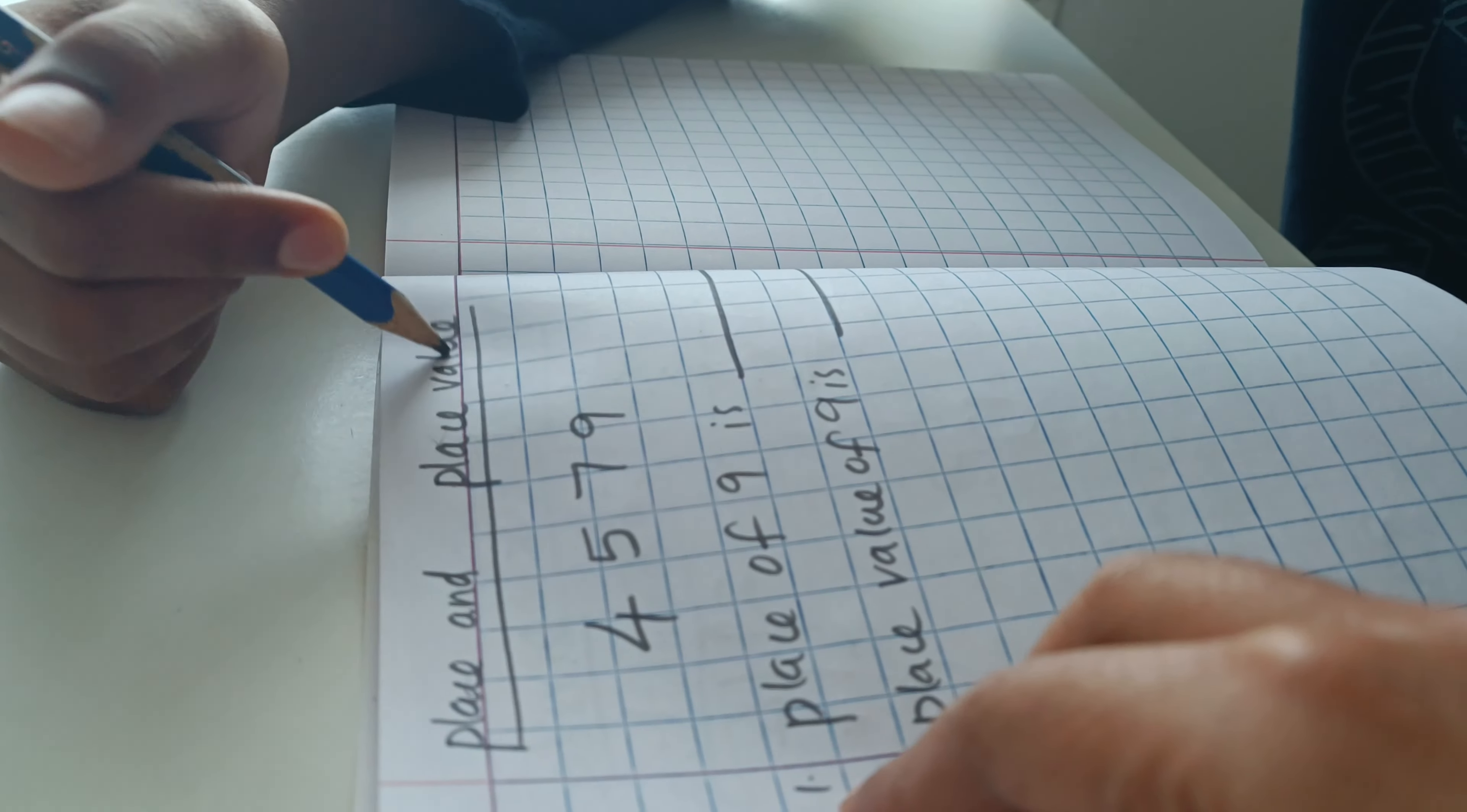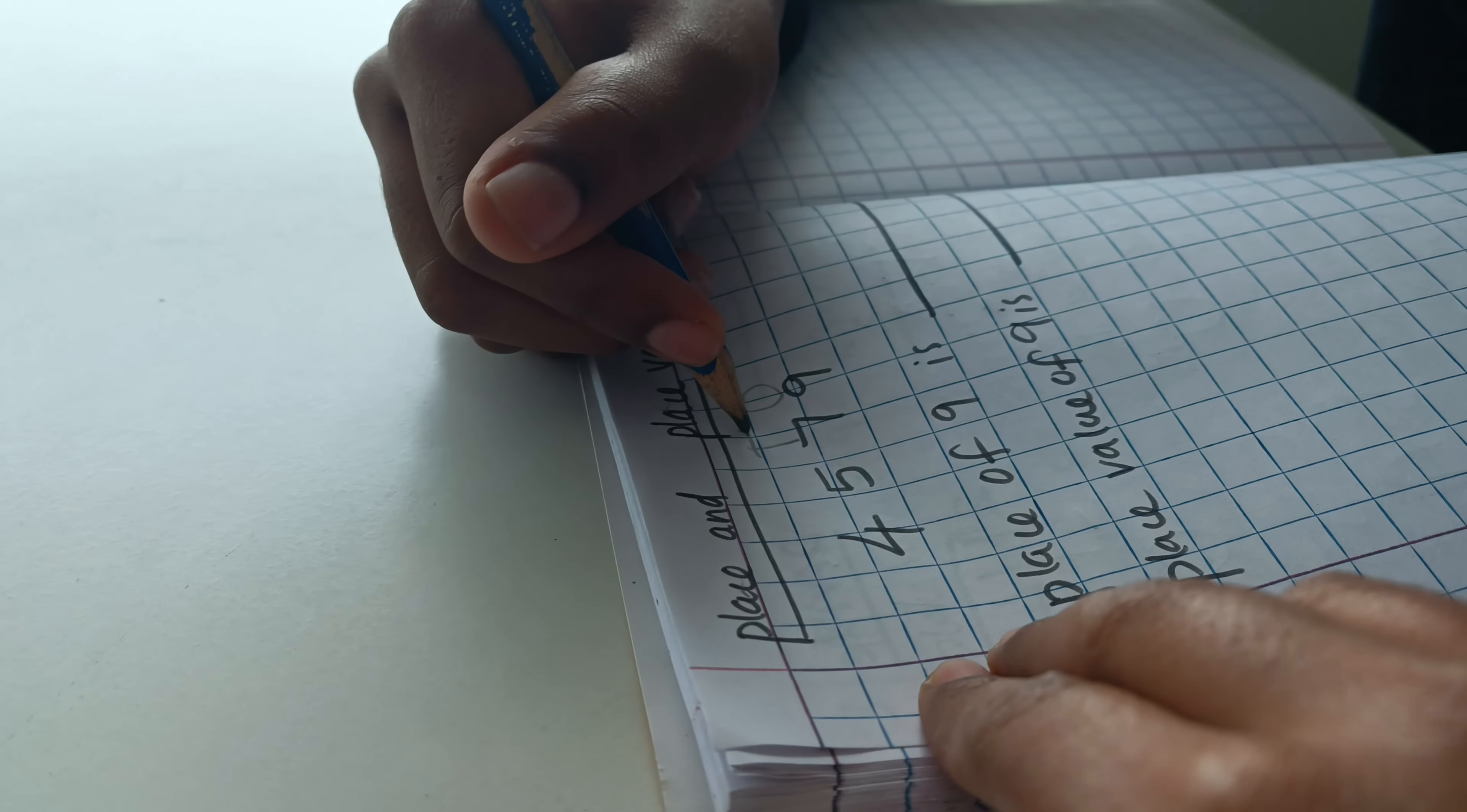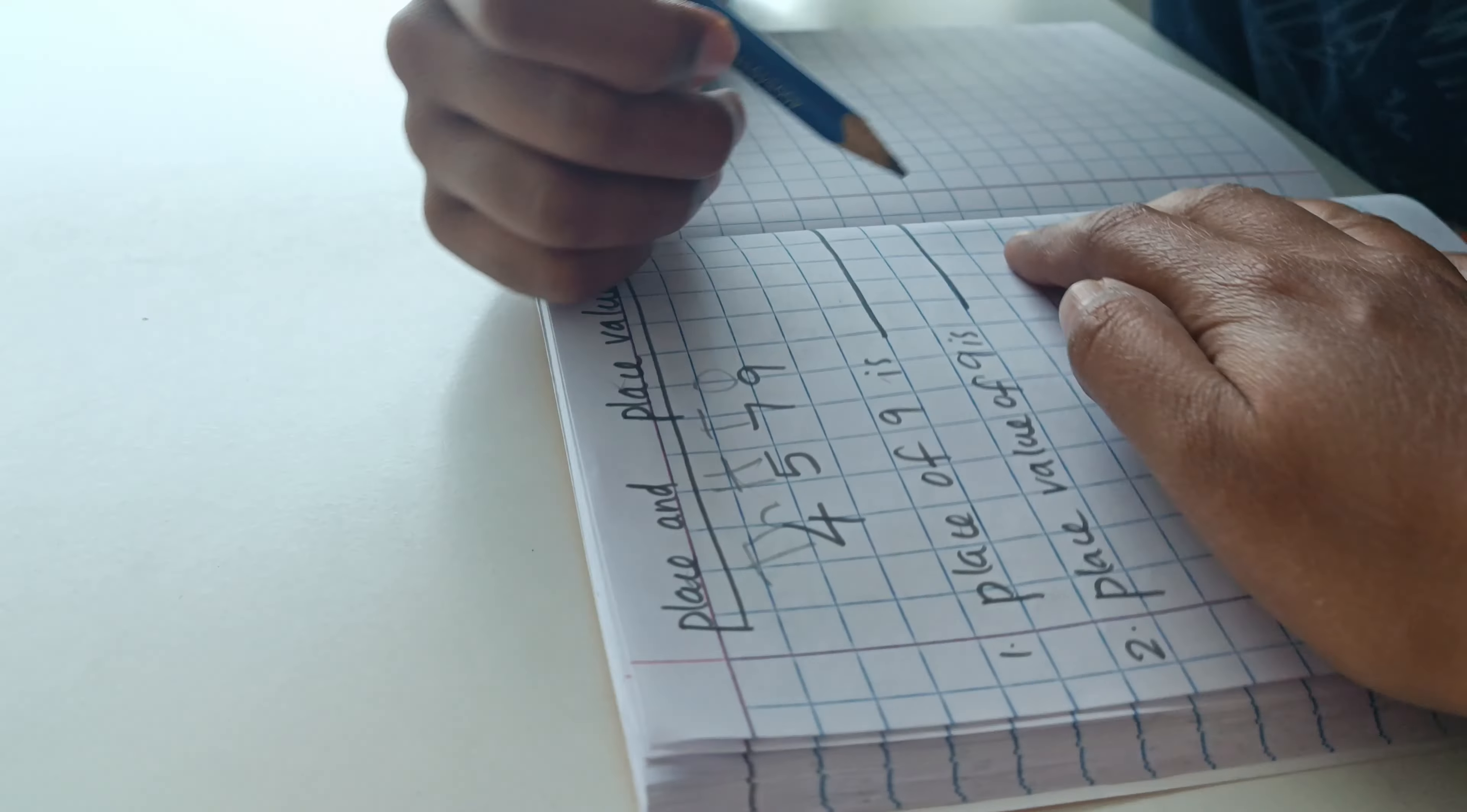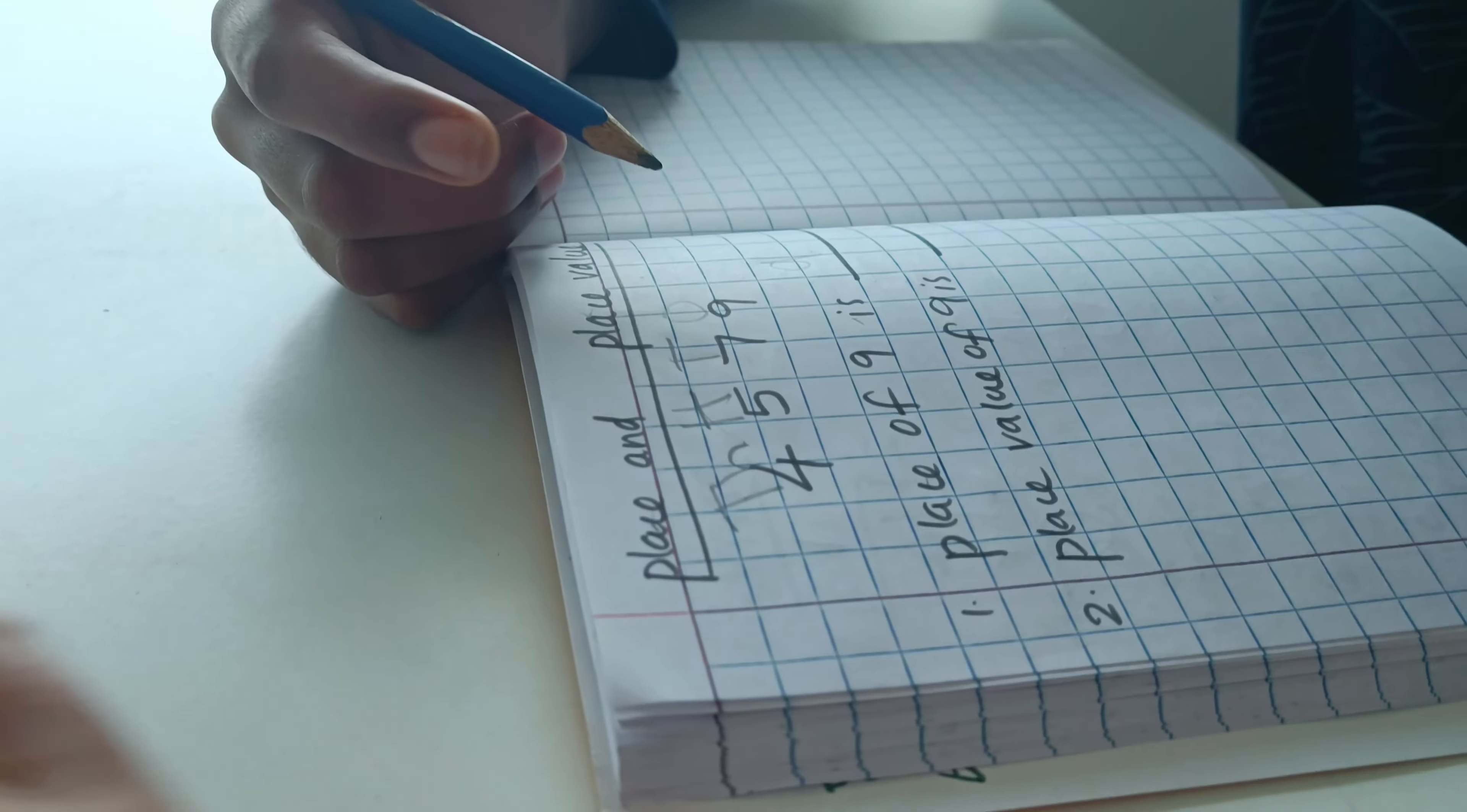Read. What's the place of nine? Nine. Place of nine is? Once. Erase and write.